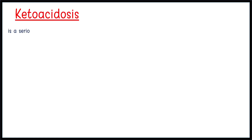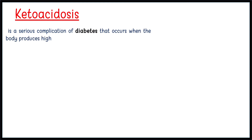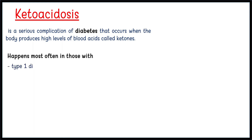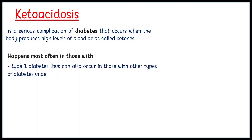Diabetic ketoacidosis is a serious complication of diabetes that occurs when the body produces high levels of blood acids called ketones. It happens most often in those with type 1 diabetes, but can also occur in those with other types of diabetes under certain circumstances.